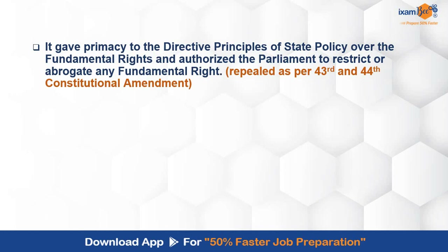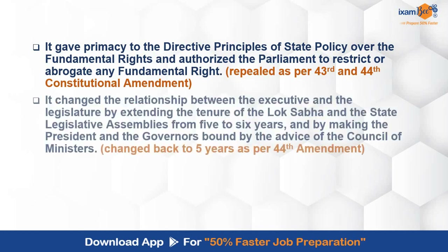One more landmark thing done in this amendment was giving primacy to DPSPs over fundamental rights. This gave authority to the parliament to restrict or abrogate fundamental rights by amending them in order to give effect to DPSPs. DPSPs are directives to the government to carry out their functions and responsibilities, but they became a tool prevailing over fundamental rights. This provision was also repealed by the 43rd and 44th constitutional amendments. Now we know the harmonious construction principle prevails, and if harmonious construction is not possible, fundamental rights will prevail over DPSPs.